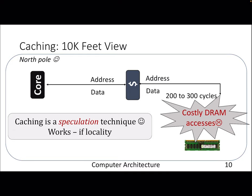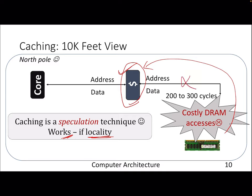At a 10,000-feet view, the notion of a cache is actually a speculation technique that works because of locality. What I mean by speculation: we bring data from DRAM into this SRAM-based cache, banking on locality — whatever we accessed before, we will likely access again in the near future, or we will access nearby addresses. Because of this locality, we may get our data from the cache in around 10 cycles with no need to go to DRAM. The downside is that SRAM is not very dense, so it has size limitations.